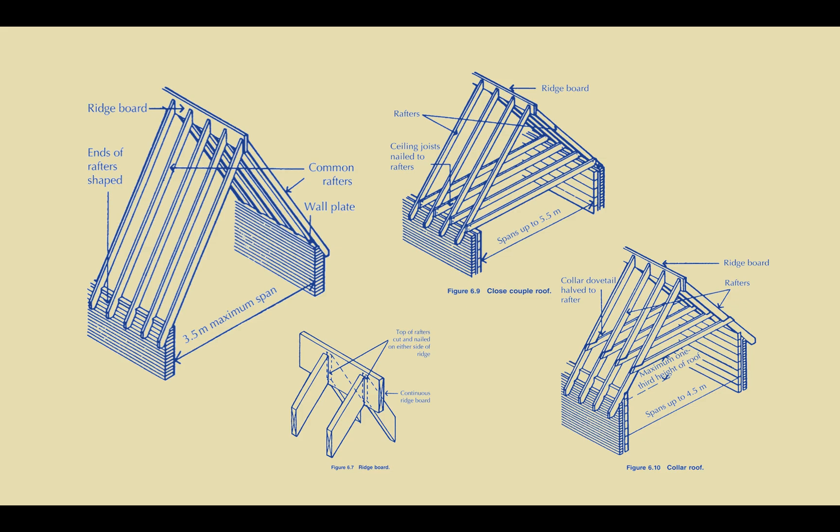Discussing the different roof types we will start with the simplest roof type which is called a couple roof and you will see that it is limited to a 3.5 meter maximum span. Once again with all of these readings please pay close attention to the diagrams alongside the text to understand how these are configured.